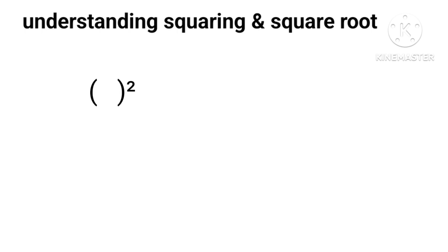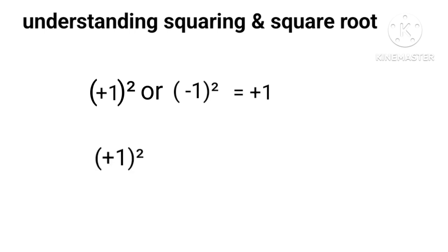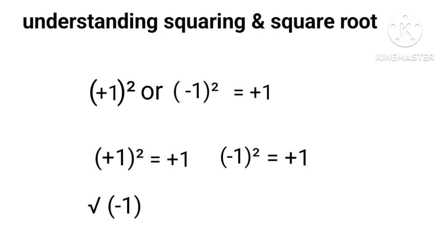Squaring of any number, positive or negative, is always positive. For example, positive one whole squared equals one, and negative one whole squared is also equal to one. But the reverse is never true — that is, the square root of a negative number is never defined.